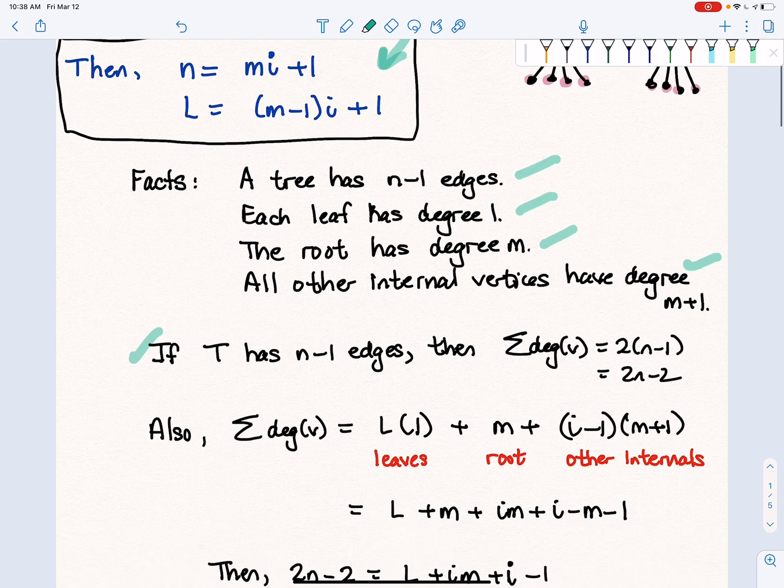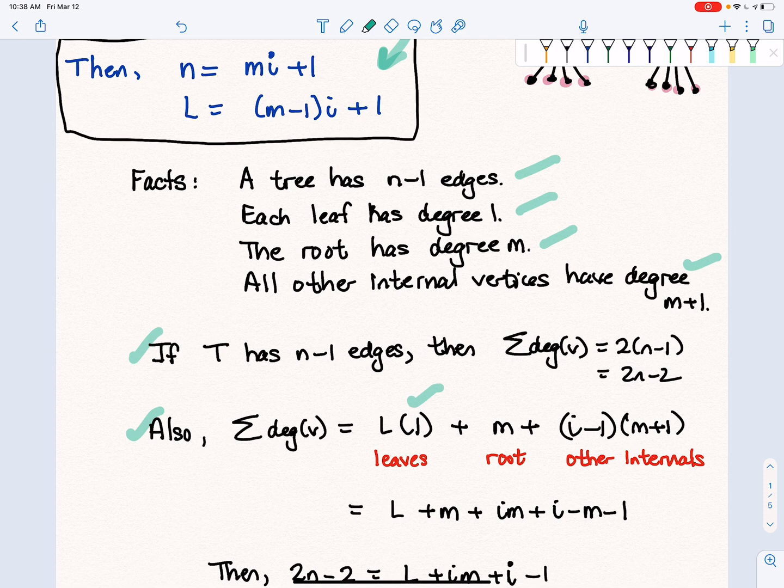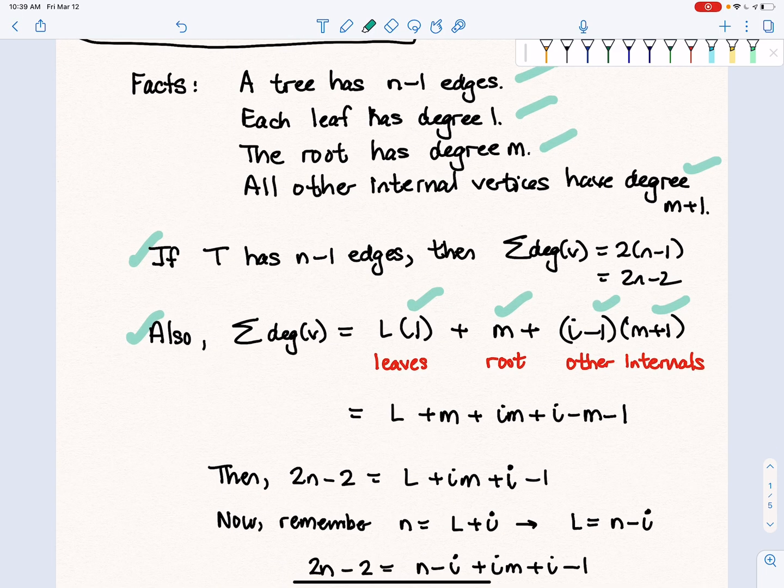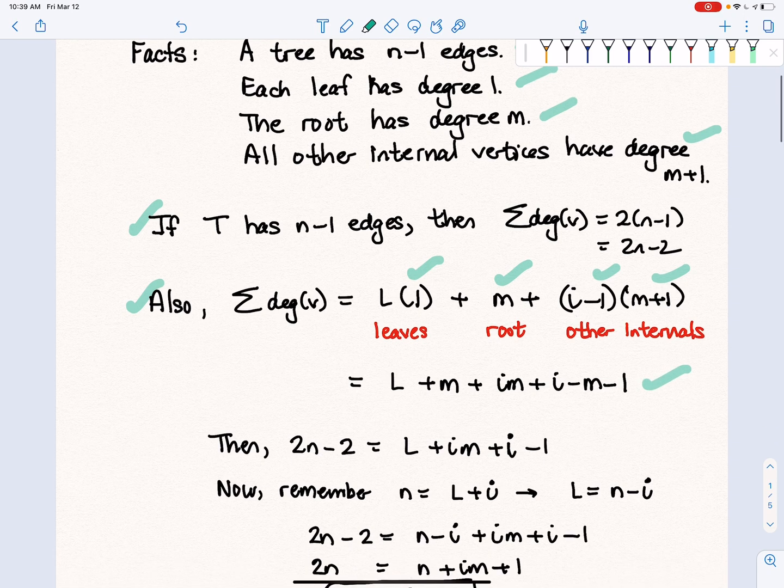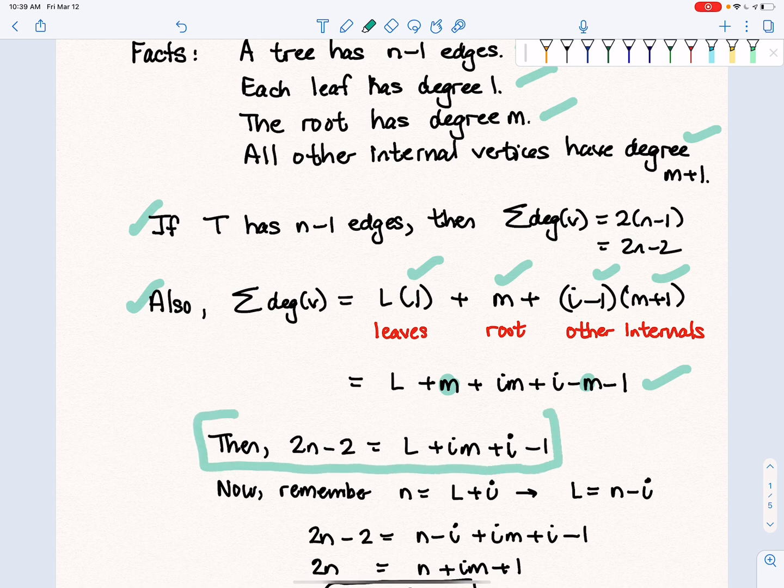We also know that the sum of all the degrees comes in three parts: every leaf has degree 1, the root has degree M, and all the other internals contribute I minus 1 internal vertices times M plus 1. We multiply that out to get L plus M plus IM plus I minus 1. Notice that the M's cross out, so we have this relationship.